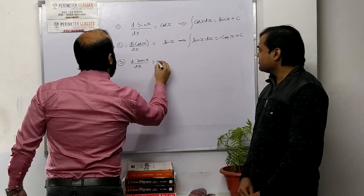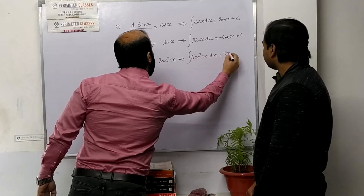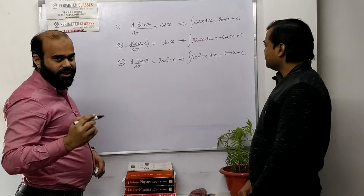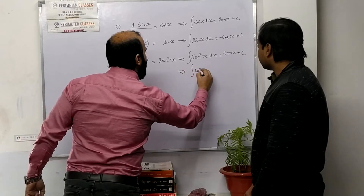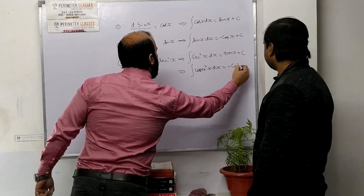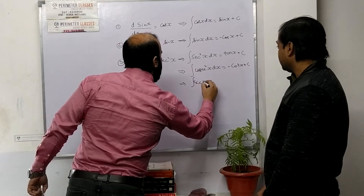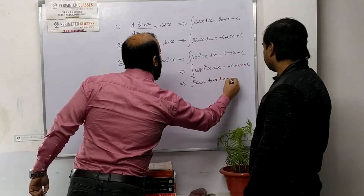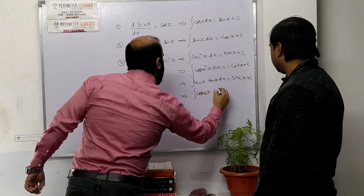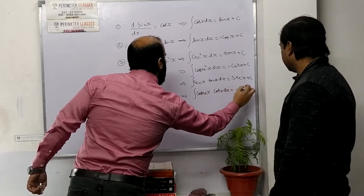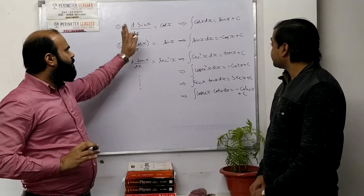Further, the differentiation of tan x is sec² x, so the integration of sec² x equals tan x + C. Similarly, the integration of cosec² x is minus cot x + C. The integration of sec x · tan x equals sec x + C, and the integration of cosec x · cot x equals minus cosec x + C.